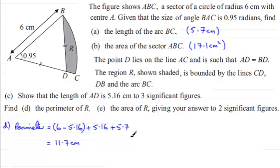Now for the next part we've got to work out the area of the region R, giving our answer to two significant figures. And to get that area, what we need to do is work out what the area of the triangle ABD is and subtract it from the area of the sector ABC.